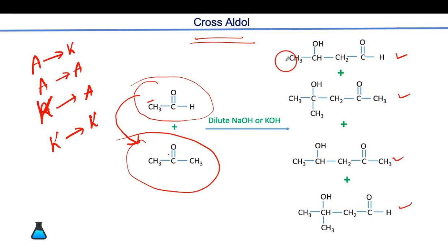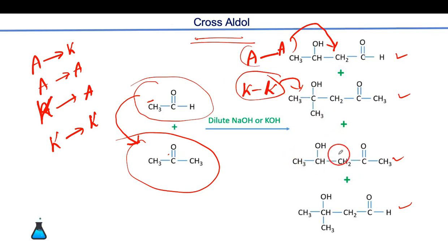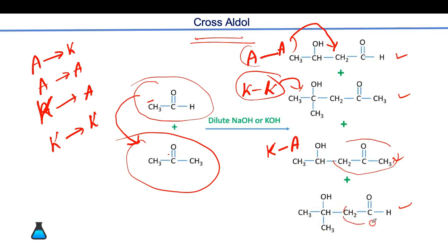Looking at each product: the first product forms when the aldehyde carbanion attacks the aldehyde carbonyl. The second product forms when ketone attacks ketone. The third product forms when ketone is the nucleophile attacking the aldehyde. The fourth product forms when aldehyde nucleophile attacks the ketone. You should also practice drawing the mechanism for all four products.